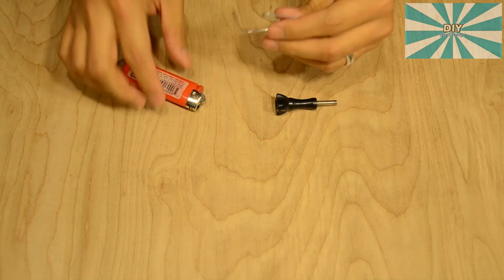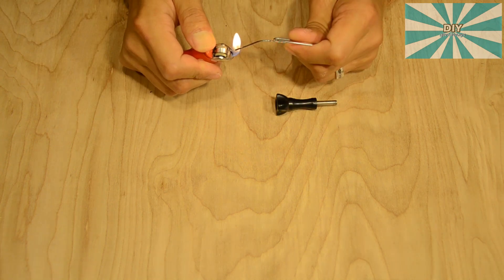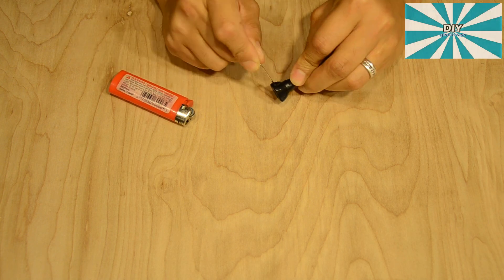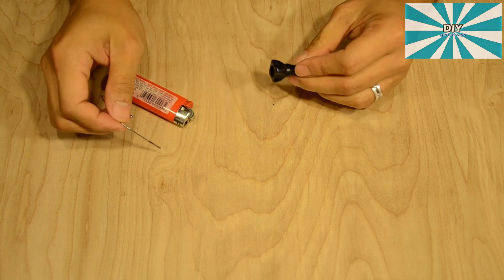Make sure not to burn yourself. Hold the screw in one hand while you insert the hot paper clip into the wall of the screw. Repeat until you have a big enough hole for the keychain ring.